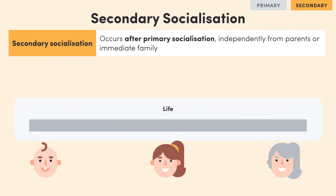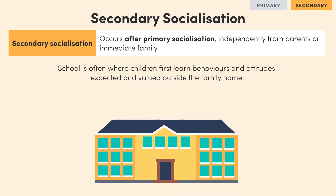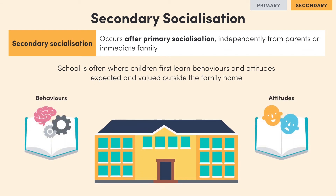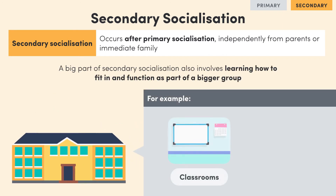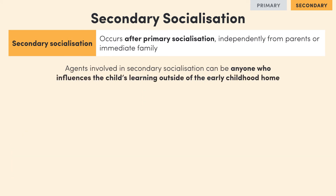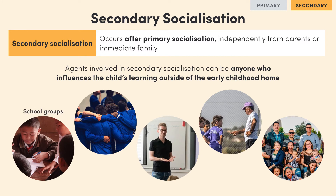Secondary socialisation occurs after primary socialisation and is when you start to socialise independently from your parents or immediate family. This process takes place as you move from childhood into adulthood, and involves learning behaviours and attitudes from other agents which aren't your immediate family or parents. School plays a big role in secondary socialisation as this is often where children first learn what kind of behaviours and attitudes are expected and valued outside the family home. A big part of secondary socialisation is also learning how to fit in and function as part of a bigger group, like in a classroom or a sports team. The agents involved can really be anyone who influences the child's social learning outside of the early childhood home — so school groups, sports teams, teachers, coaches, or extended family.